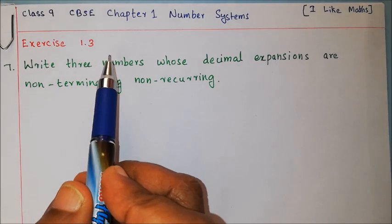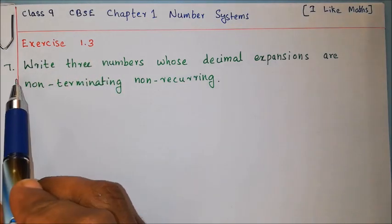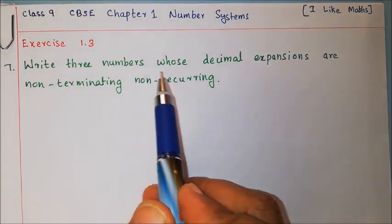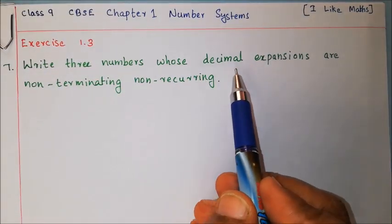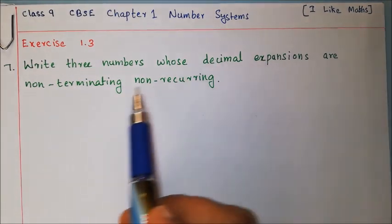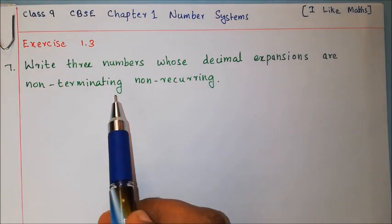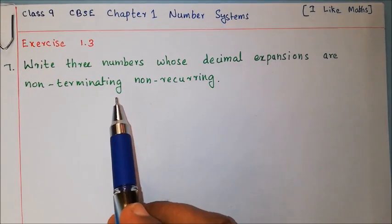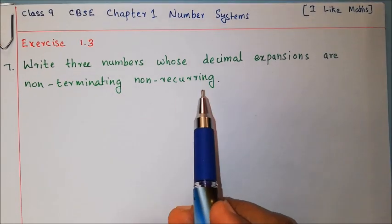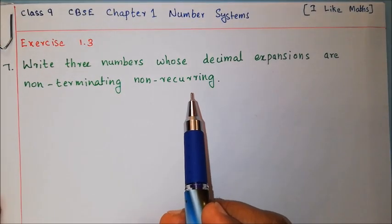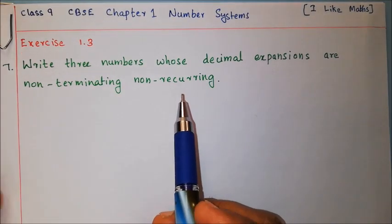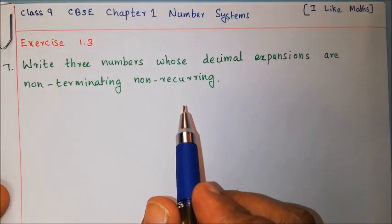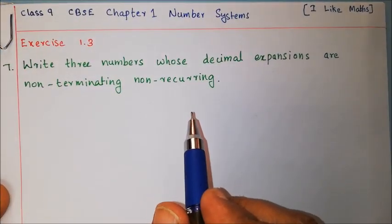Exercise 1.3, Question 7. Write three numbers whose decimal expansions are non-terminating, non-recurring. Non-terminating, non-recurring numbers are irrational numbers.